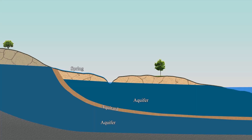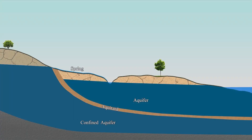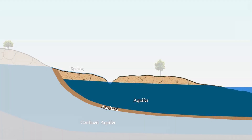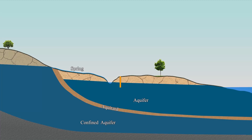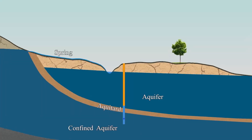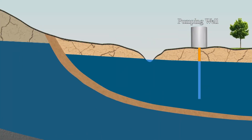Aquifers that are bounded on the top and bottom by aquitards are called confined aquifers. In confined aquifers, the groundwater is under pressure. If penetrated by a well, the water level in a confined aquifer will rise above the top of the aquifer. In some cases, the water will reach the surface, resulting in a flowing or artesian well.